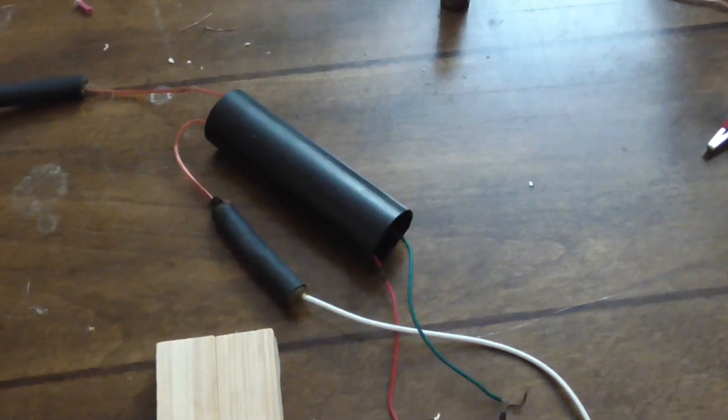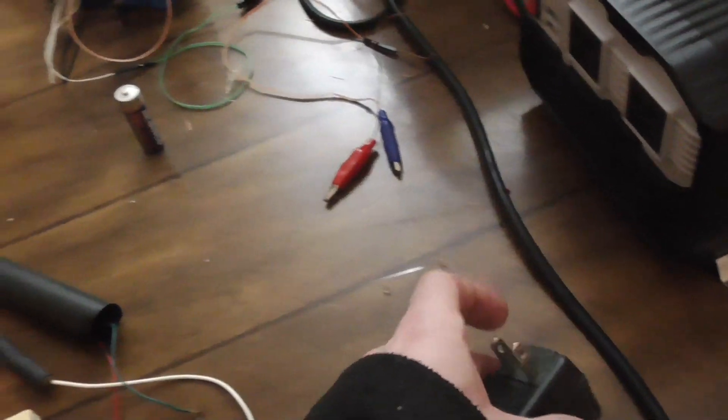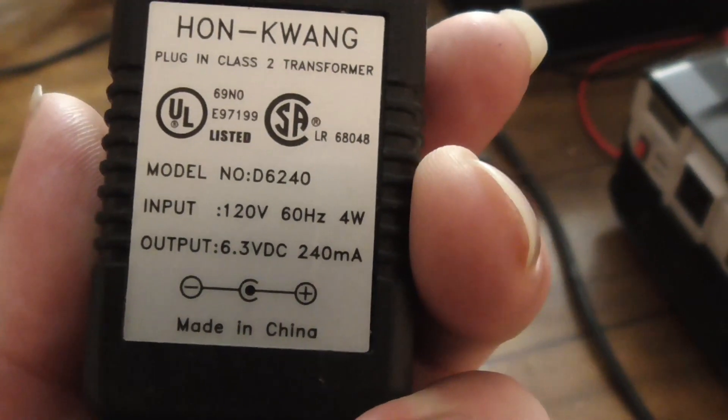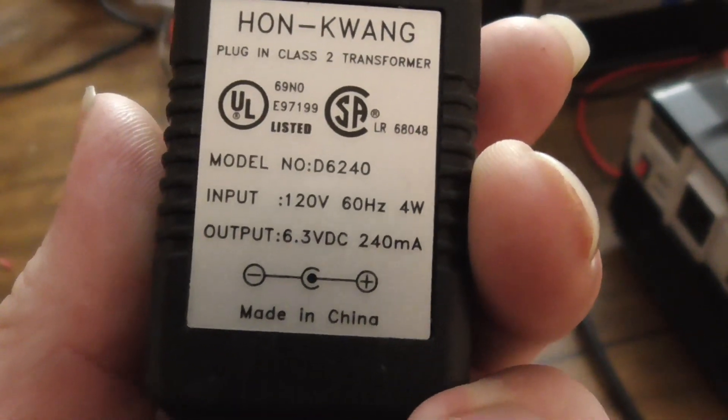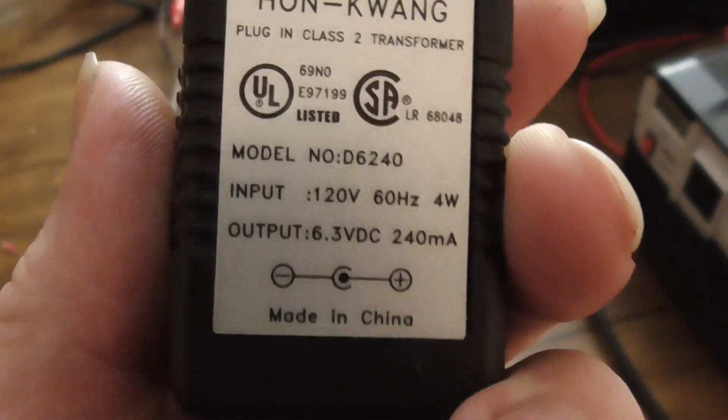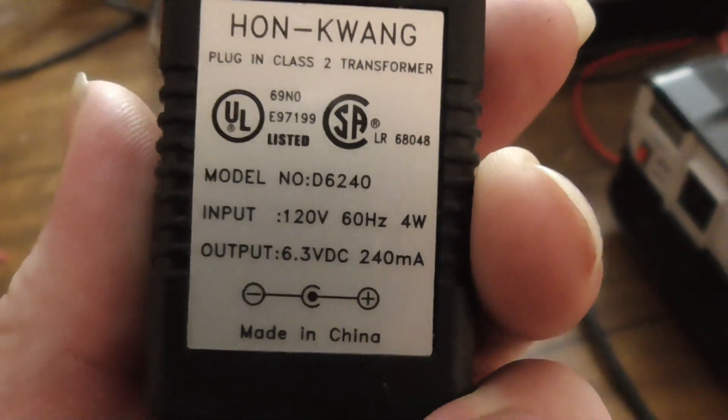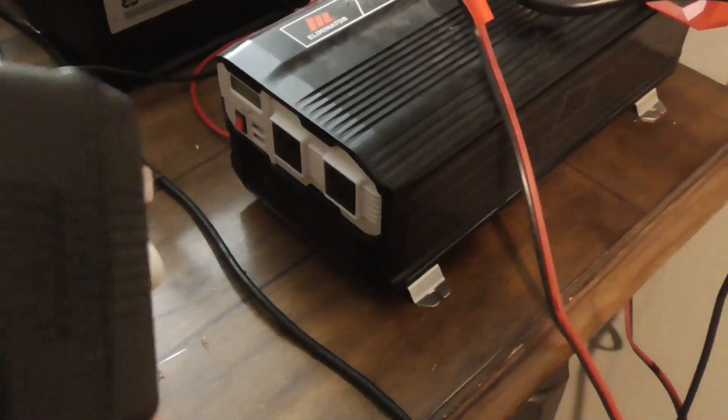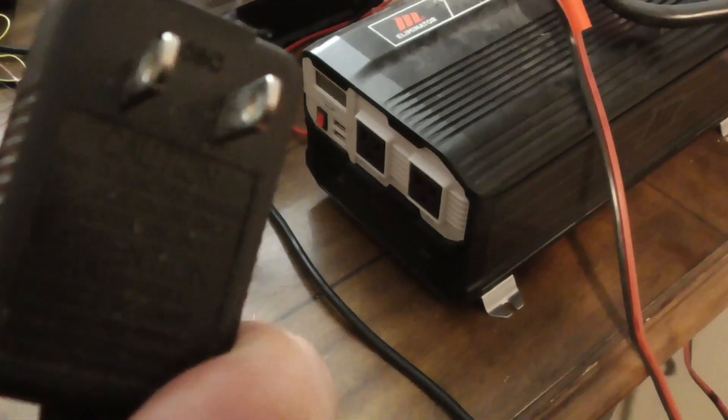And this is a high voltage generator, basically a flyback module which generates our spark gap at very, very low voltage usage. So this is only 6.3 volts DC here.